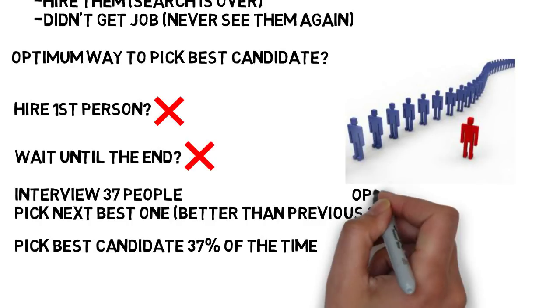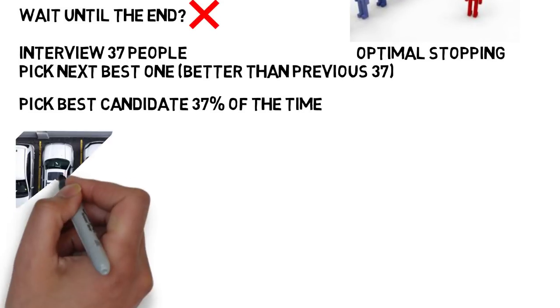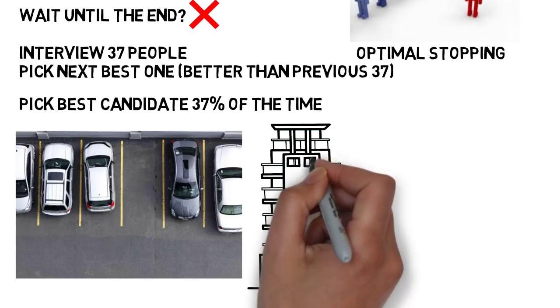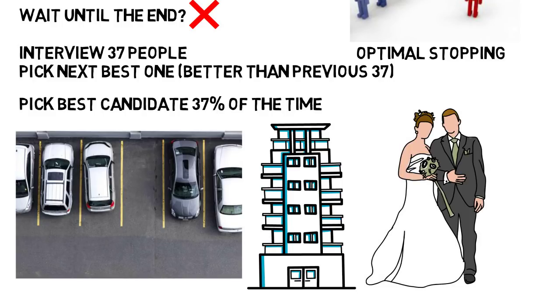This is known as optimal stopping, where you can't always go back after making a decision. And this can apply to looking for a parking spot, picking an apartment, or choosing to marry someone. And that 37% shows up in these types of problems, although we did have to assume a few things about the situation to simplify it.